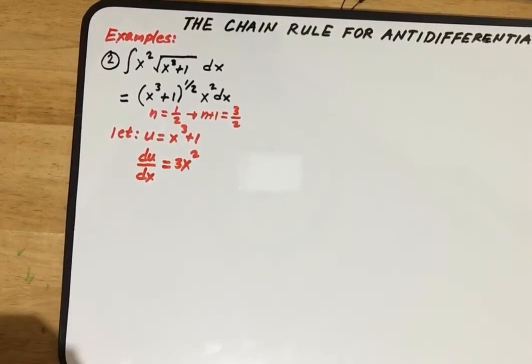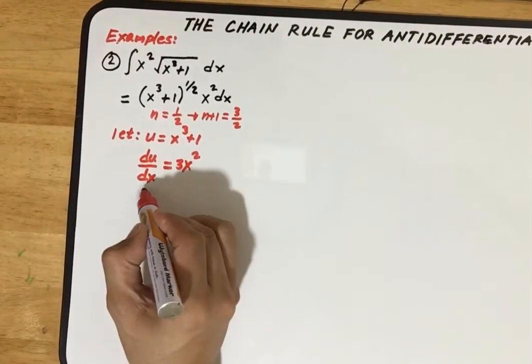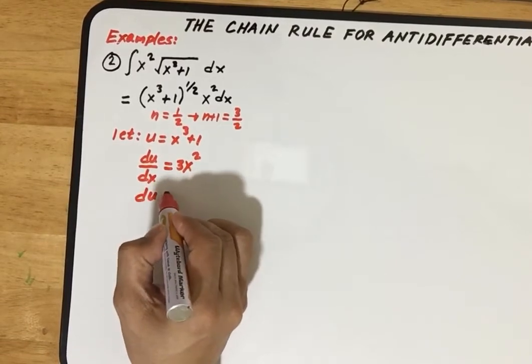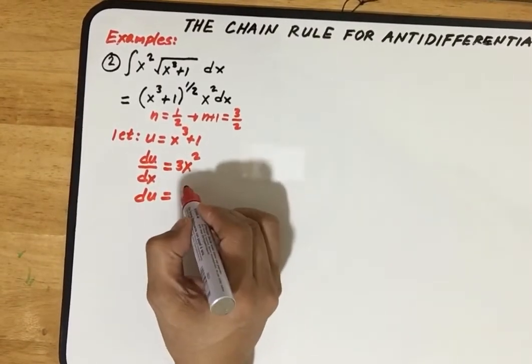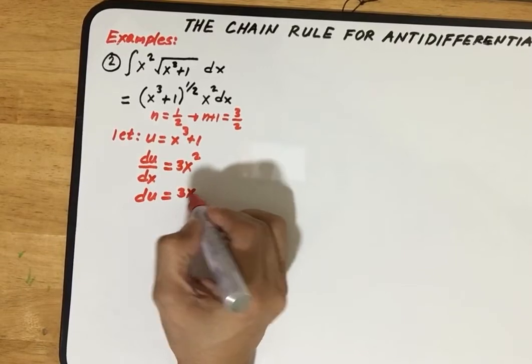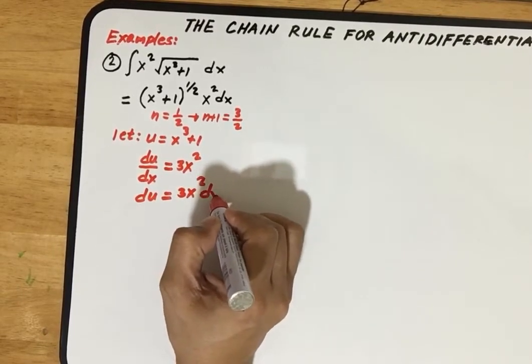Solving for du, we multiply both sides by dx or cross multiply dx, so du equals 3x squared times dx.